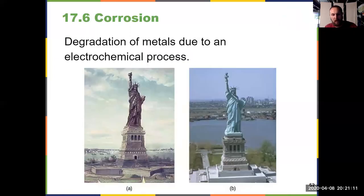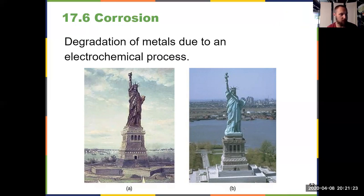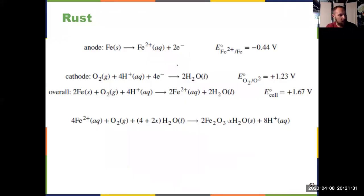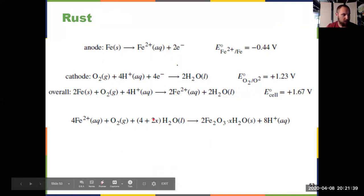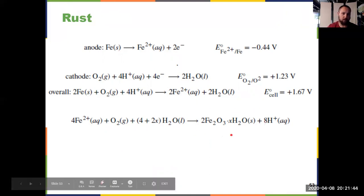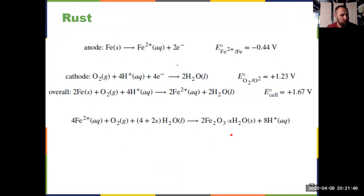That finishes section 17.5 on batteries and fuel cells. Now we go to 17.6, a quick discussion of corrosion — where we see metals degrade over time because of electrochemistry. You see iron rust, or a copper patina like what we have with the Statue of Liberty. The actual rust is iron 3 oxide hydrate.